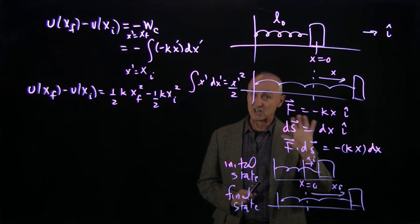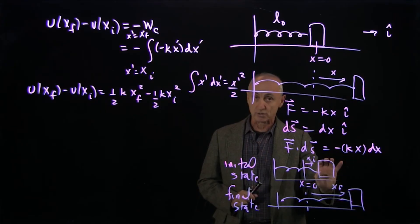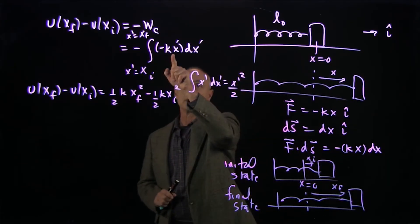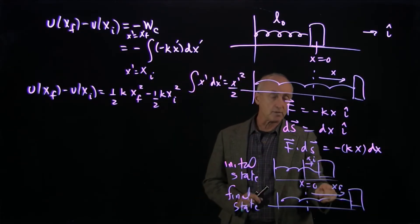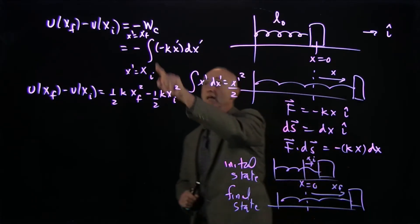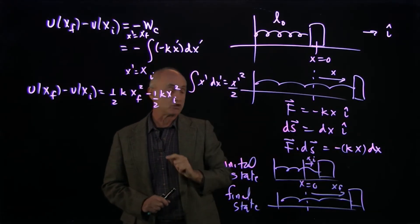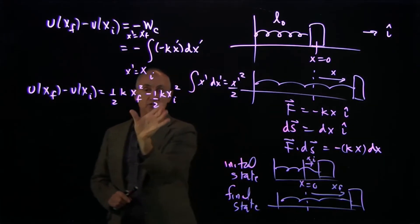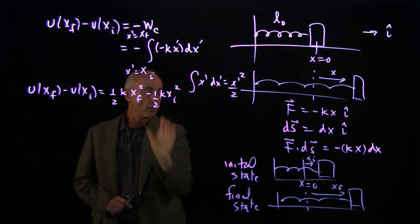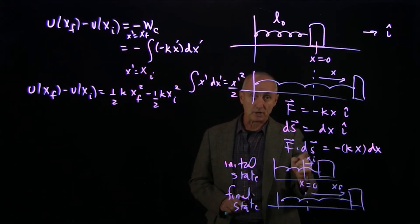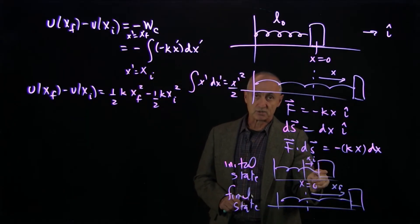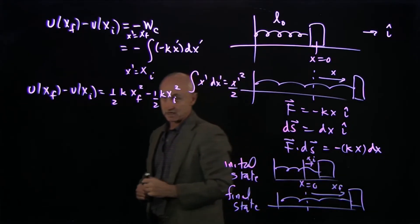I'm not talking about the work that an external agent does in stretching it or compressing it. This is explicitly the work done by the spring force on the block as it goes from the initial state to the final state. I introduced the minus sign in our definition of potential energy. And so this quantity represents the negative of the work done by the spring force as the system goes from the initial to the final states.